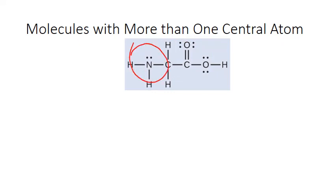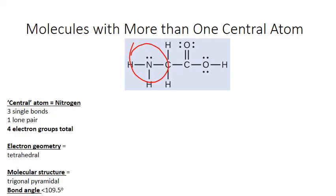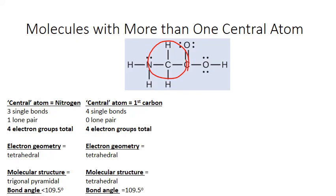Let's start with nitrogen. Nitrogen has three single bonds and one lone pair — that's four electron groups total, corresponding to a tetrahedral electron geometry, a bond angle of a little less than 109.5 degrees, and a trigonal pyramidal molecular structure. On the first carbon atom, we have no lone pairs but four single bonds — again four electron groups, tetrahedral electron geometry, bond angle closer to 109.5 degrees, and a tetrahedral molecular shape.